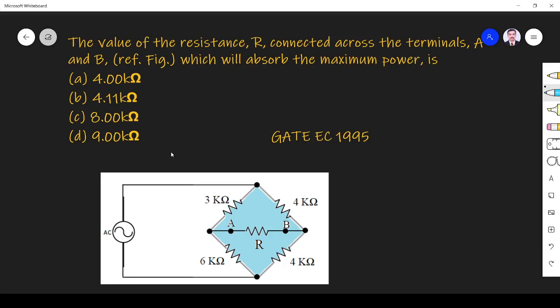Hi friends, in this video let us solve an antenna-related problem asked in GATE EC 1995 paper. The question is: the value of resistance R connected across the terminals A and B of the figure which will absorb the maximum power is 4 kilo ohm, 4.11 kilo ohm, 8 kilo ohm, or 9 kilo ohm.